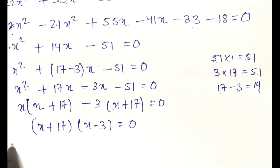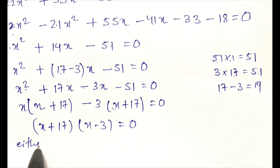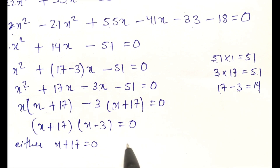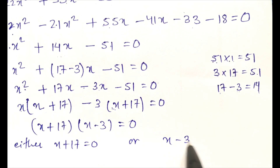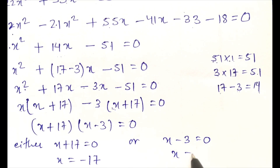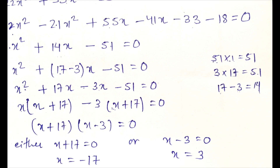Now either x + 17 = 0, giving x = -17, or x - 3 = 0, giving x = 3. So this is how we solve the given equation and we got the solutions as x = 3 and x = -17.